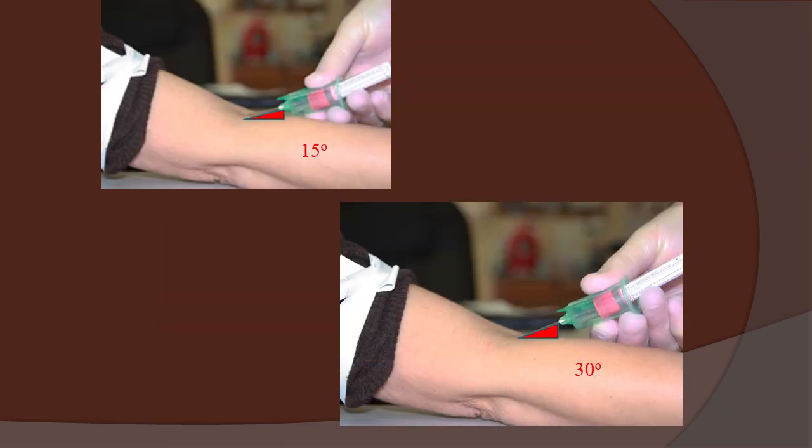We see on the left a low angle of insertion, about 15 degrees. On the right, we see about a 30 degree angle of insertion.